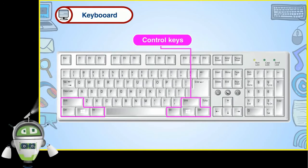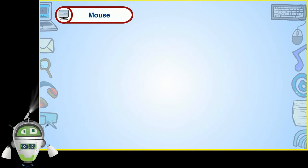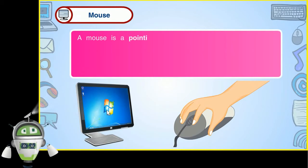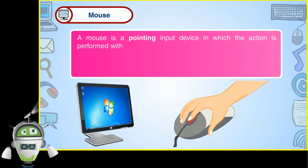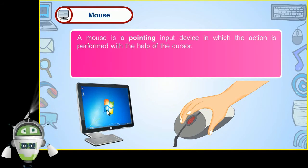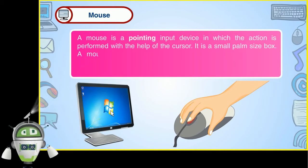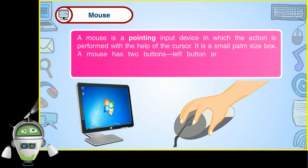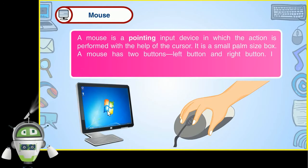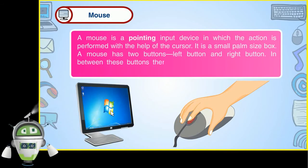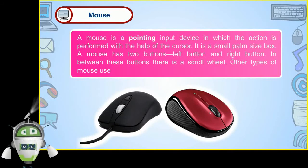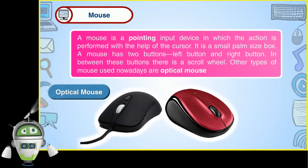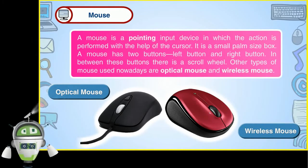Mouse: A mouse is a pointing input device in which the action is performed with the help of a cursor. It is a small palm size box. A mouse has two buttons, left button and right button. In between these buttons, there is a scroll wheel. Other types of mouse used nowadays are optical mouse and wireless mouse.